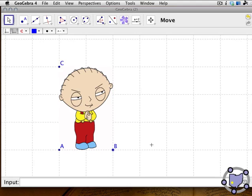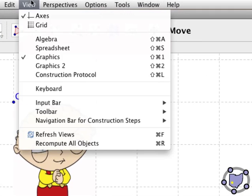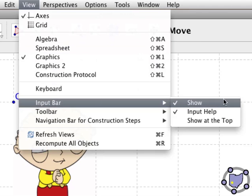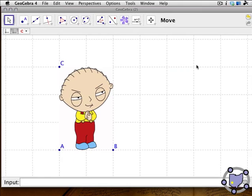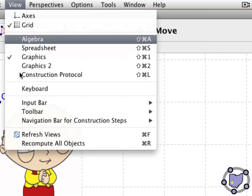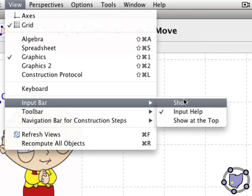We're going to create a couple more points that are going to define a vector, and then we're going to translate this picture of Stewie using the vector. Go down to the input bar. If it's not visible already, you go to the View menu and pick Input Bar and Show - that'll show the input bar.